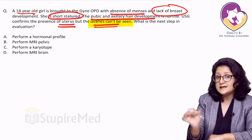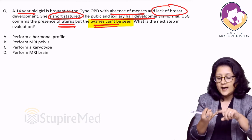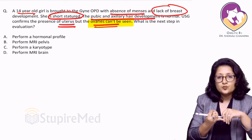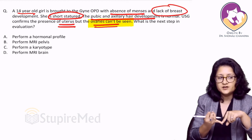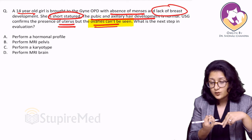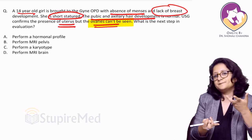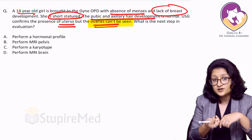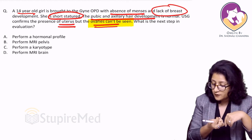Ovaries not seen on ultrasound could mean two things: either they are not there, or they are so small — streak gonads, dysgenetic gonads — that they cannot be seen properly. Or it is just that the ultrasonologist wasn't able to see them despite them being present. So there could be two possibilities.